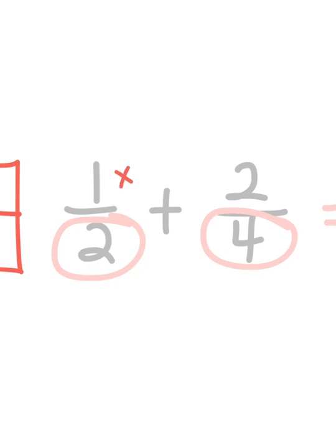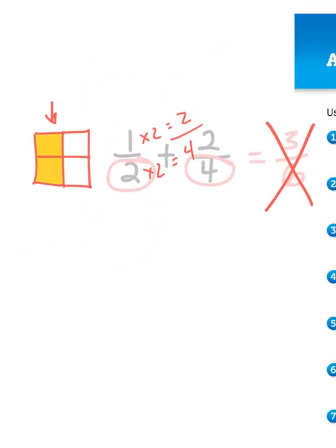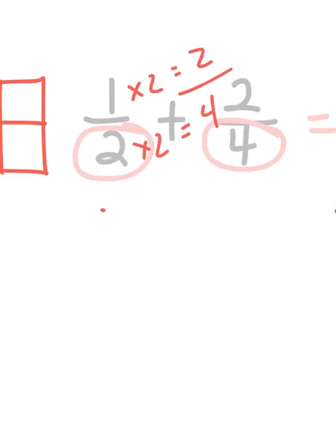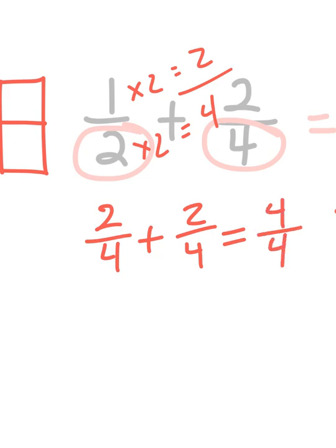So one times two gives me two. Two times two gives me four. And my fraction becomes two-fourths. So my new problem is actually two-fourths plus two-fourths is going to give me a total of four-fourths. All I had to do is I had to convert my denominators into like denominators. So that usually means one of the two fractions needs to be changed.